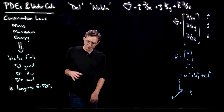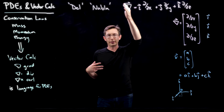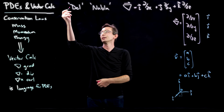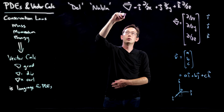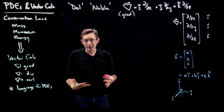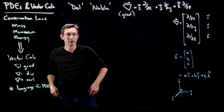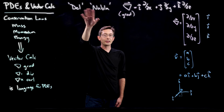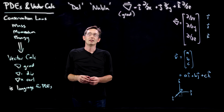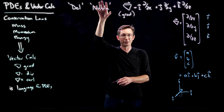Del or nabla is also called 'grad' — this is also the gradient or grad operator. It is a linear operator, and I'll tell you how to compute the grad, the div, and the curl in a minute.